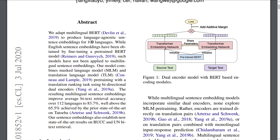One popular approach proposed previously is to train a BERT model on large amounts of raw monolingual data in a large number of languages, which can produce pretty decent embeddings. In this paper, the authors extend this approach to also use parallel datasets available for many languages to further fine-tune the multilingual embeddings and make them even better.